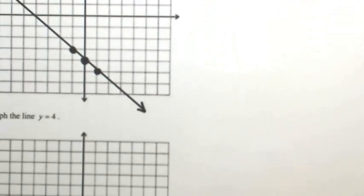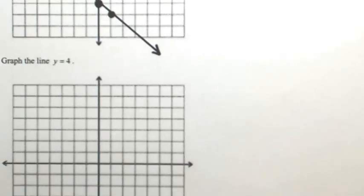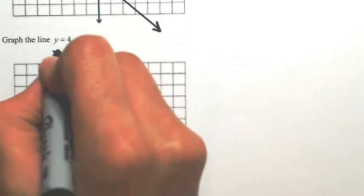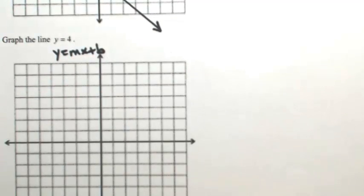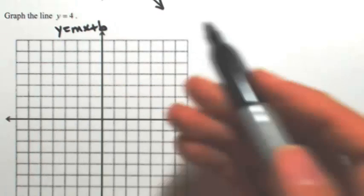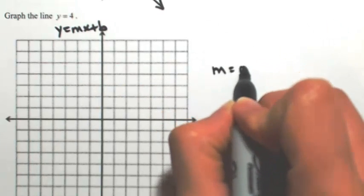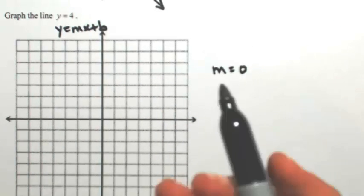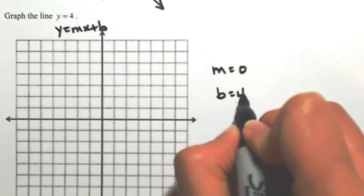Let's look at one more. Say we have y equals four. Again, in slope-intercept form, you might notice that there is no x, so that means the number that's in front of x is zero. So it means that your slope is zero. Zero x plus four, so that means your y-intercept is four.